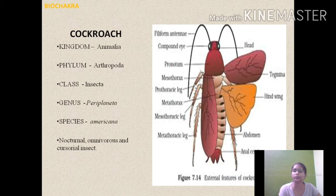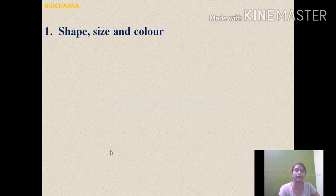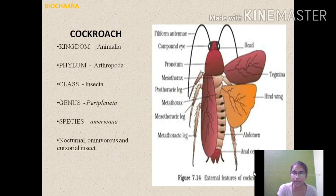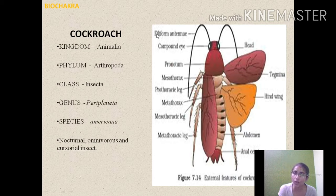Now we will study about the shape, size, and color. From the diagram you can see the external features of the cockroach: antenna, head with compound eyes, hind wings, fore wings, prothoracic leg, mesothoracic leg, metathoracic leg, and abdomen. The body is narrow, elongated, and bilaterally symmetrical — equally divided into right and left halves.